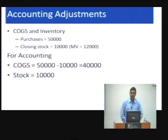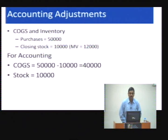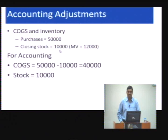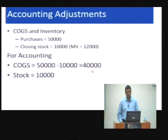Let us take an example with respect to COGS and inventory. In accounting, inventory is valued at cost or market value, whichever is lower, because of the conservative principle. In this case, if purchases are 50,000, closing stock is 20,000, and the market value is 2 lakh — for accounting, COGS is 50 minus 10, that is 40,000, and the balance sheet asset is taken as 10,000.